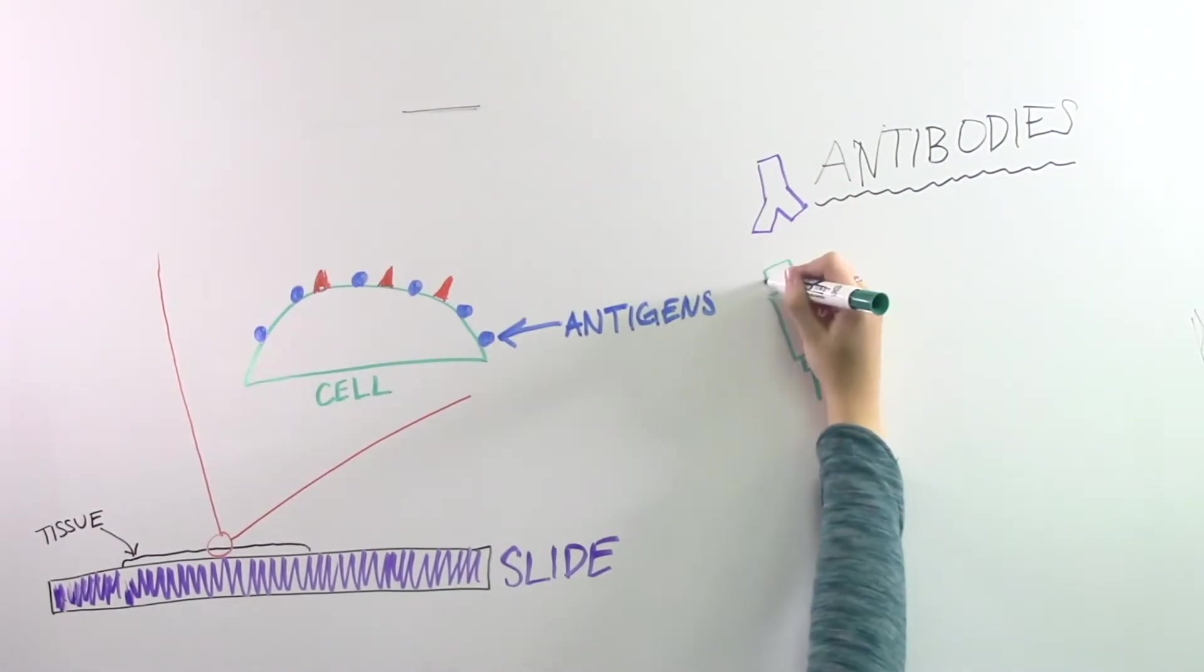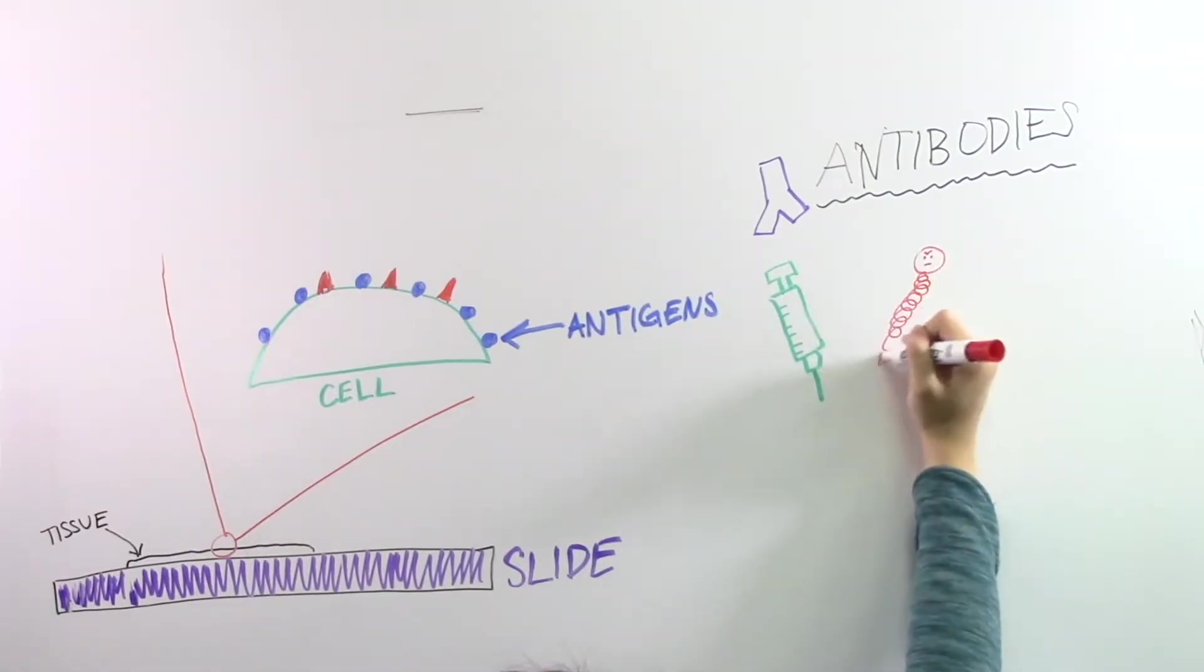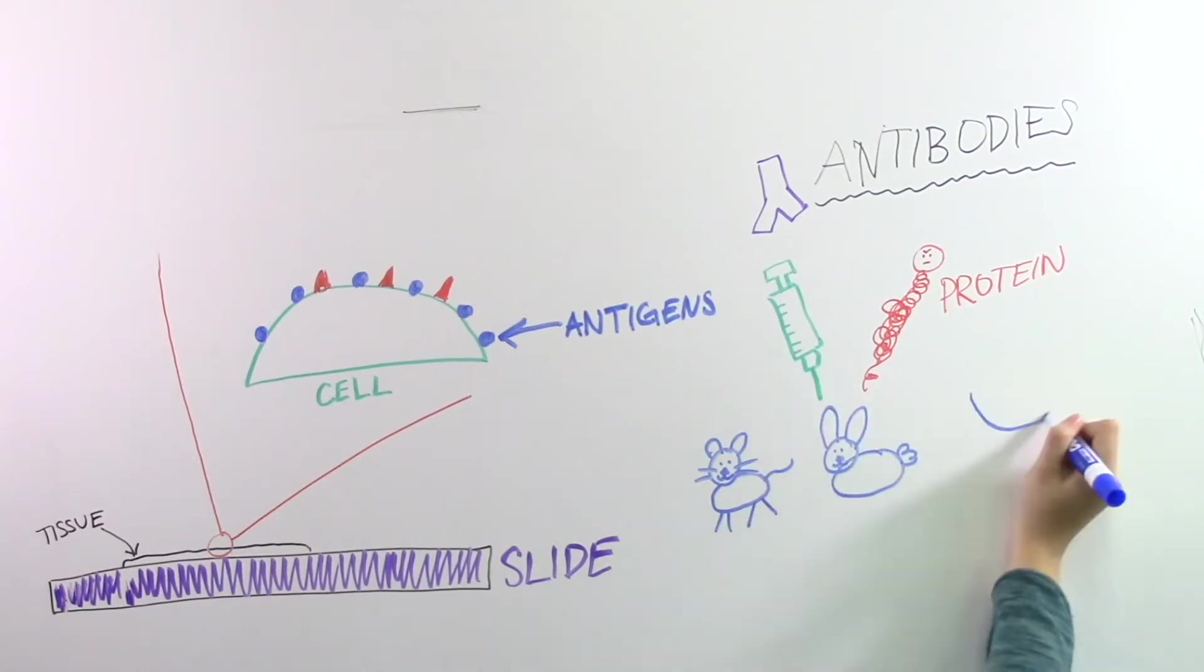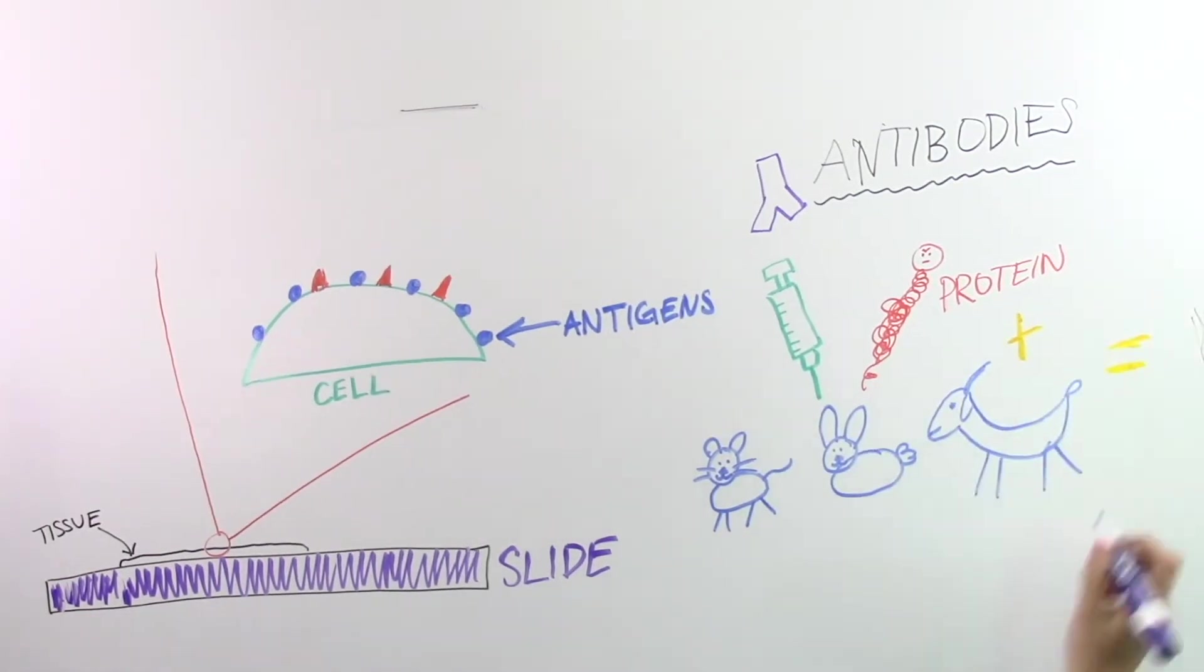Antibodies are made by injecting protein from the tissue sample into an animal such as a cat, a rabbit, or a goat. Because the protein is foreign and bad, their immune response kicks in and creates antibodies.